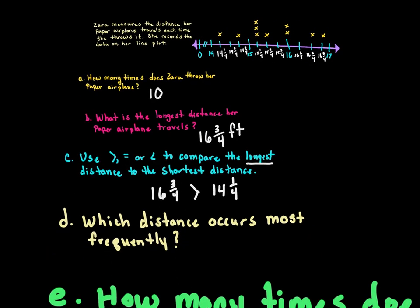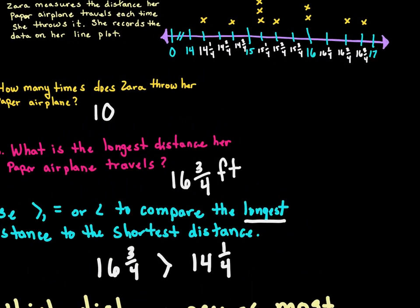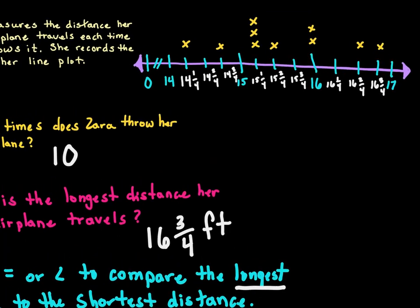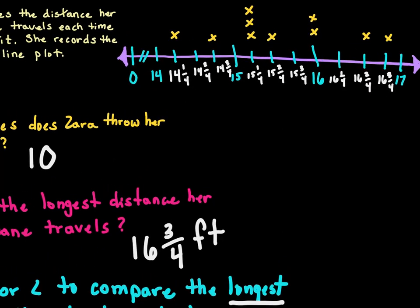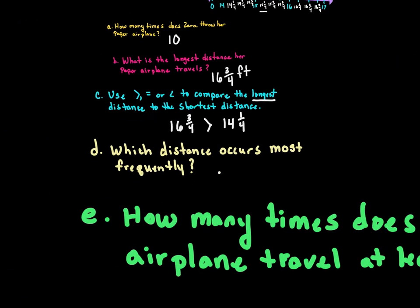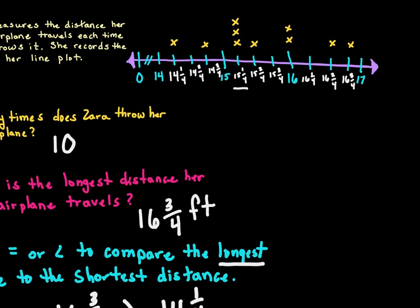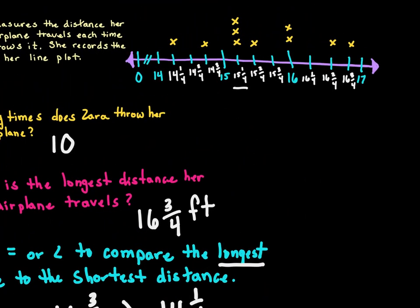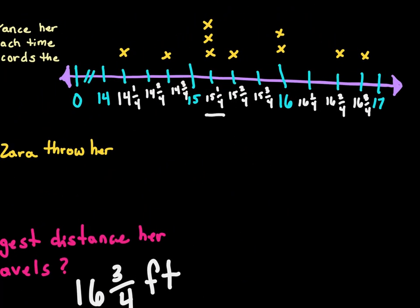Which distance occurs the most frequently? The one with the most Xs is 15 and one-fourth. So we write 15 and one-fourth feet — this one occurs the most because it has the most Xs. The next most common would be 16 feet.